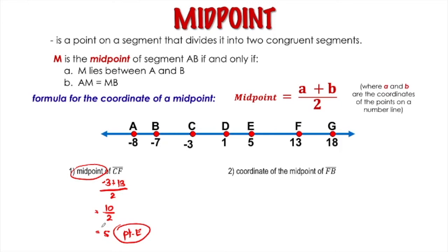For the second one, solve for the coordinate of the midpoint of segment FB. Using the same formula, the coordinate of F is 13, add it to the coordinate of B, which is negative 7, and then divide by 2. This gives us 6 over 2, which is 3. So therefore, the coordinate of the midpoint of segment FB is 3. Although in the number line we don't have a specific point for it, when you say coordinate, you give the number at that position. If you're asked to give the midpoint, you give the point itself.